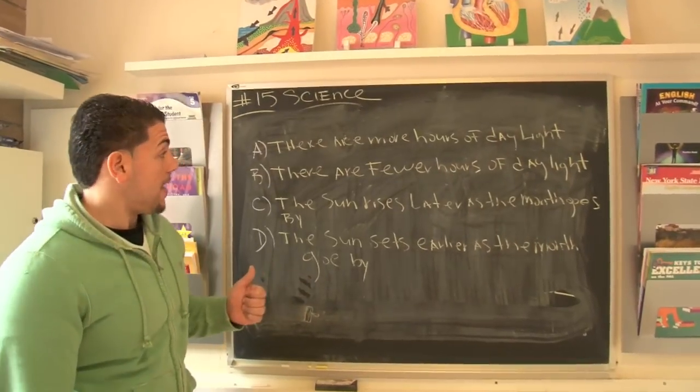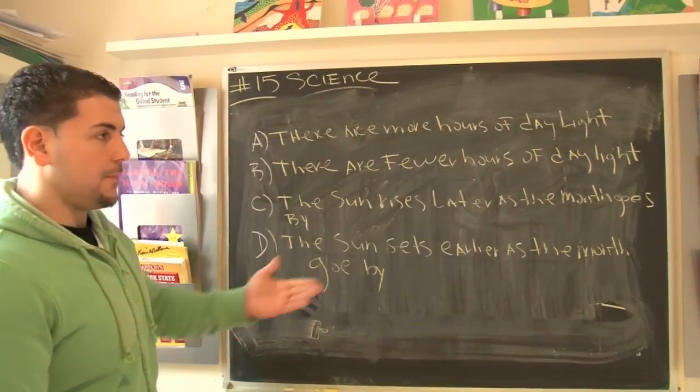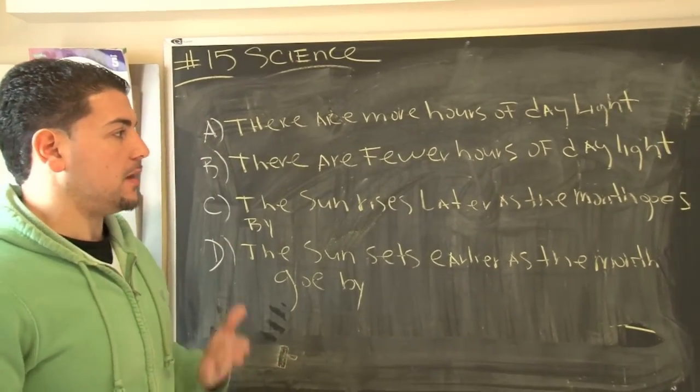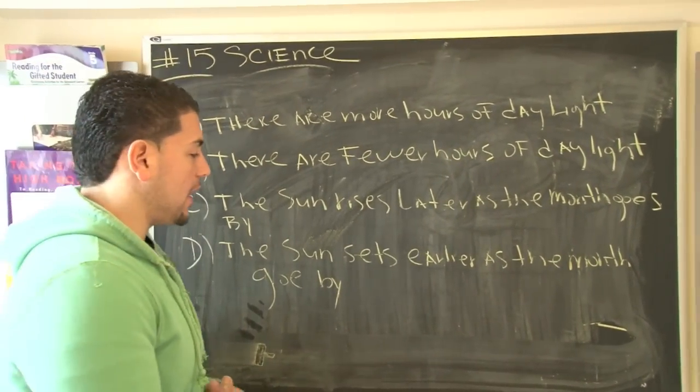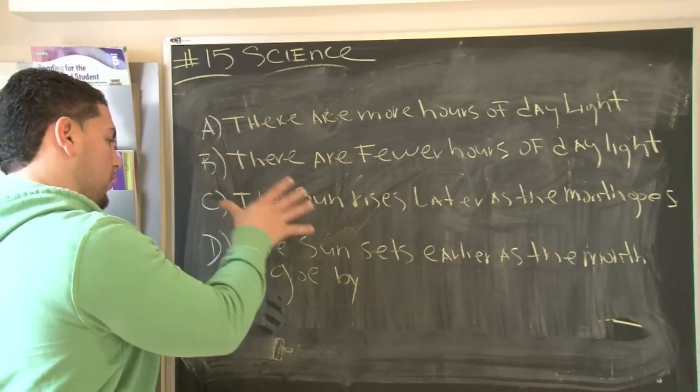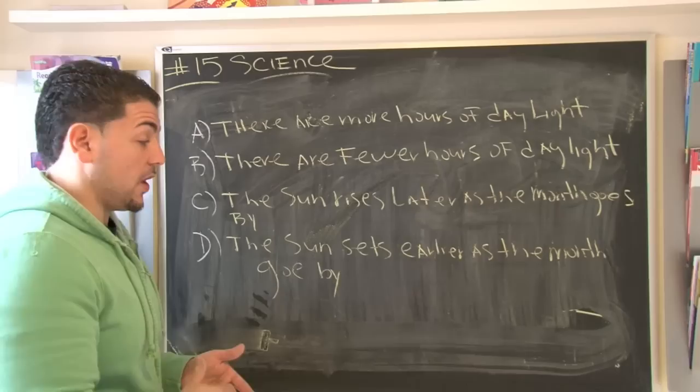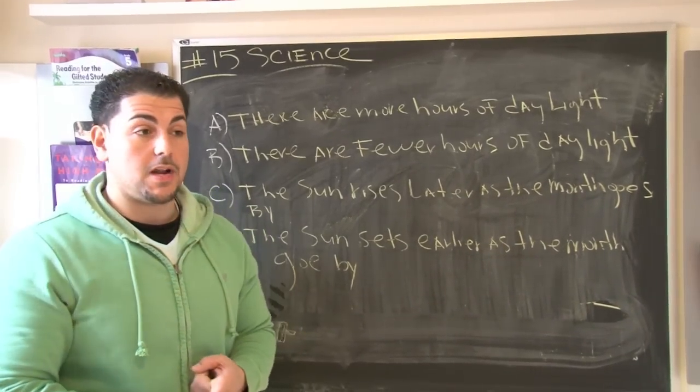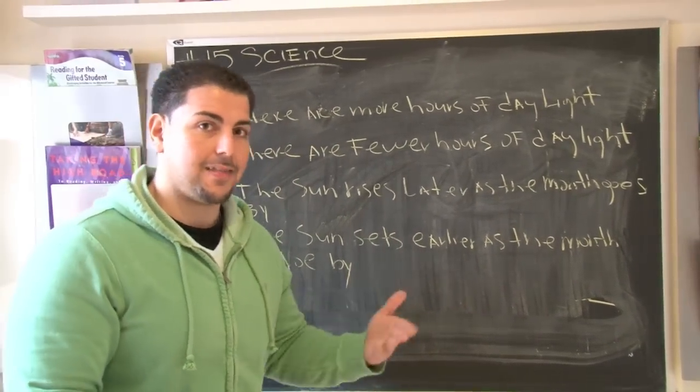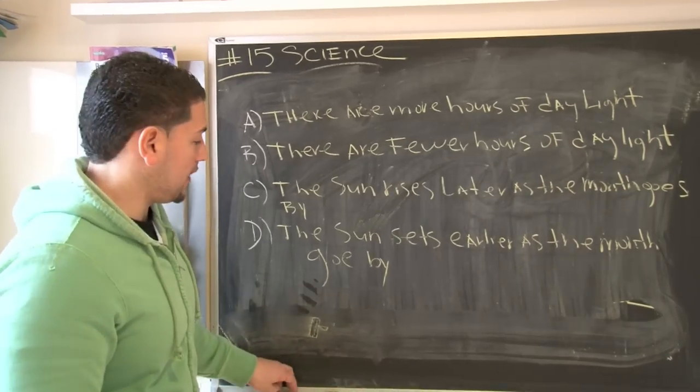We're continuing from the question that we just had. What we're trying to find out based on the chart is which statement is the most accurate. We're looking at the best statement. If you remember, we had February 8th, 15th, and 22nd. We had sunrise and sunsets. What did we notice? We noticed that the sun was coming up a lot earlier, and we noticed that the day was finishing a lot later. So what we're looking at here is the best possible answer. What I want to do is start from the bottom and work our way up.